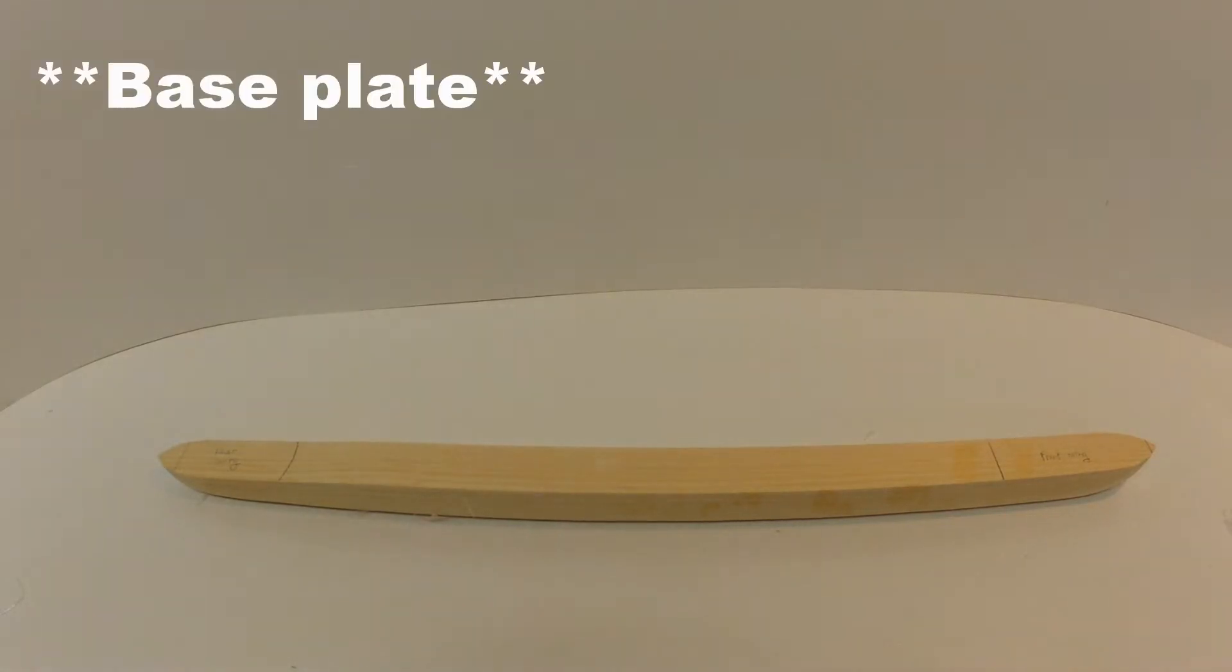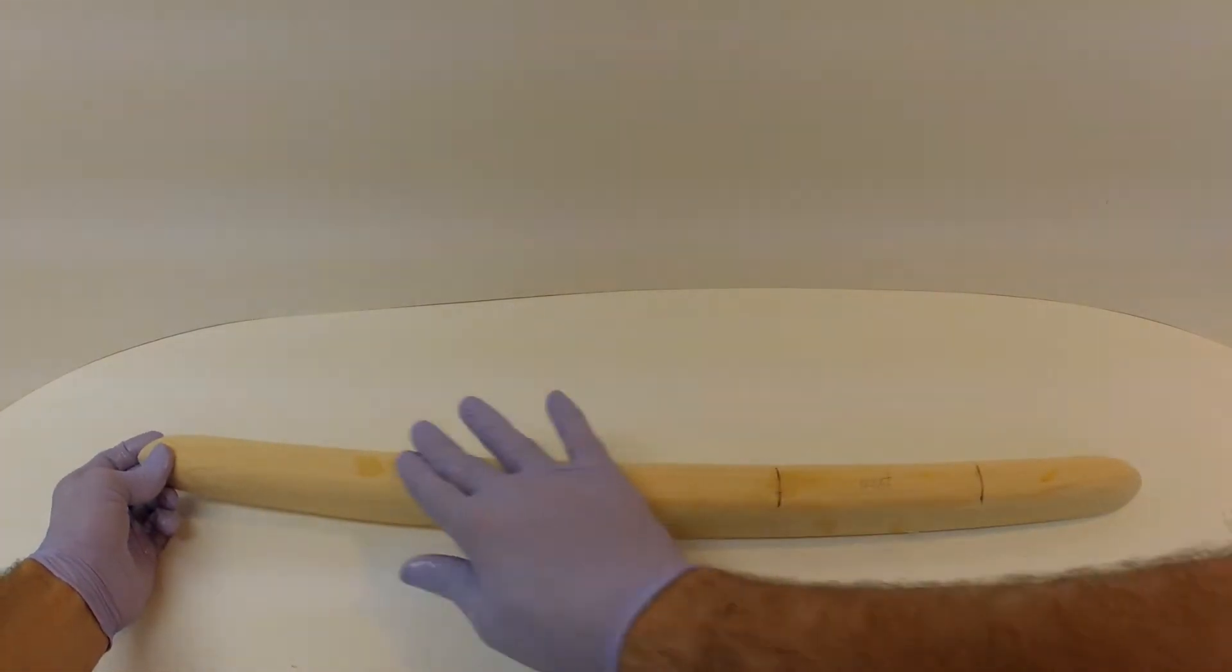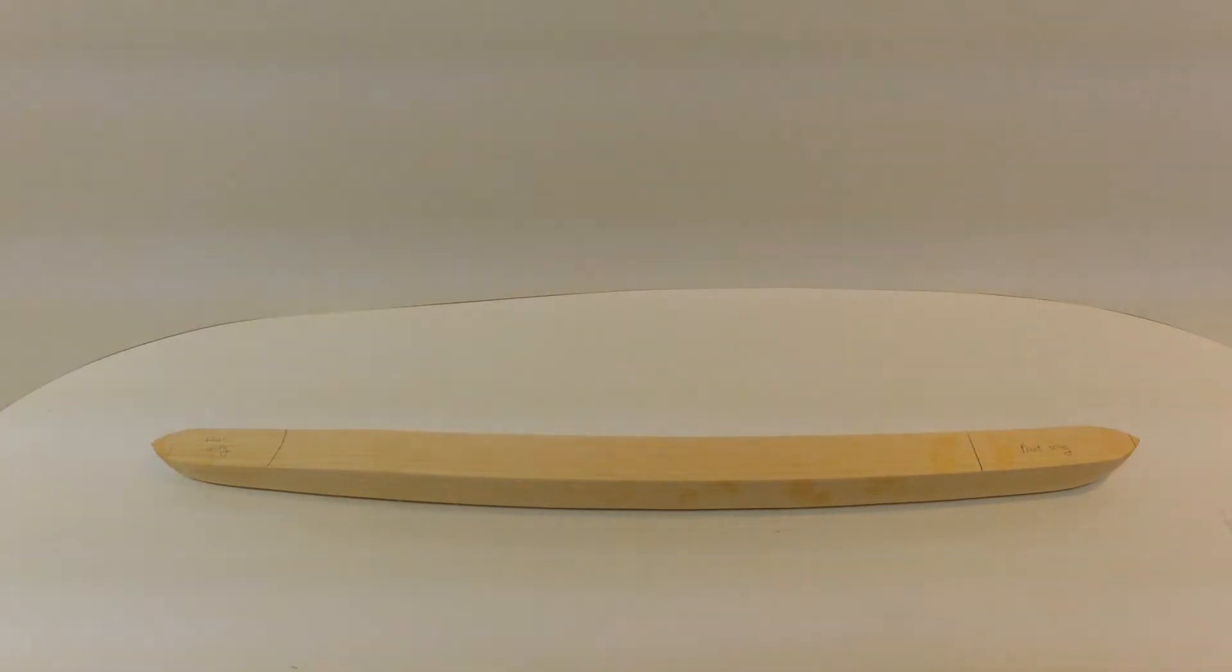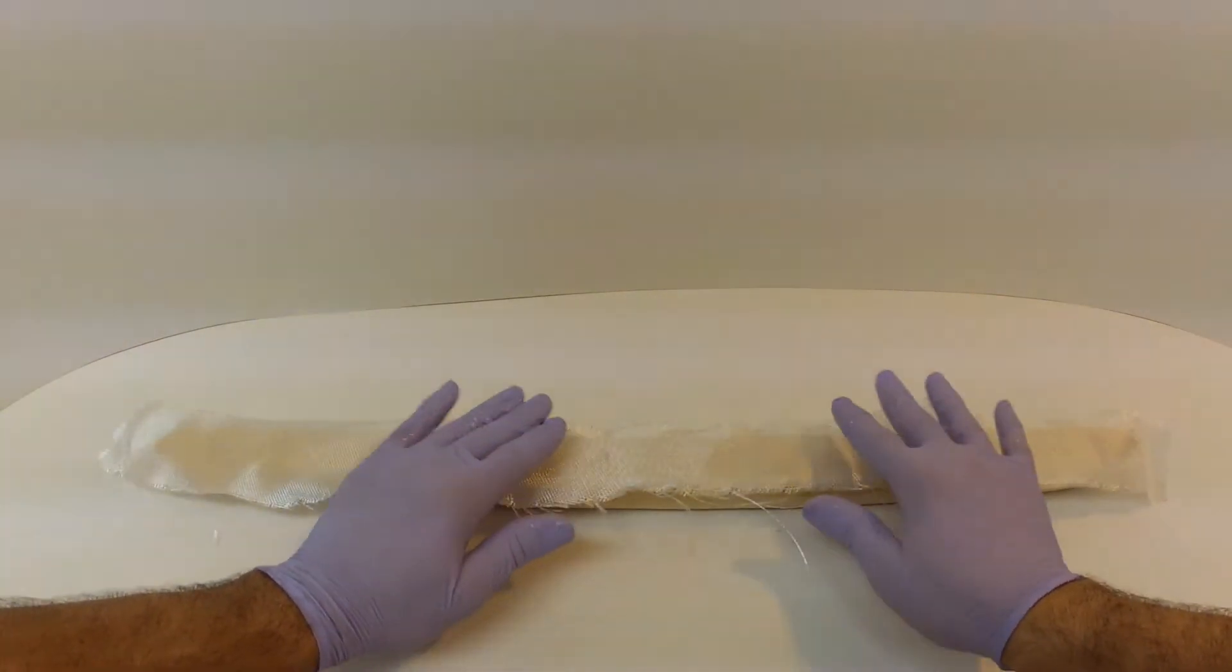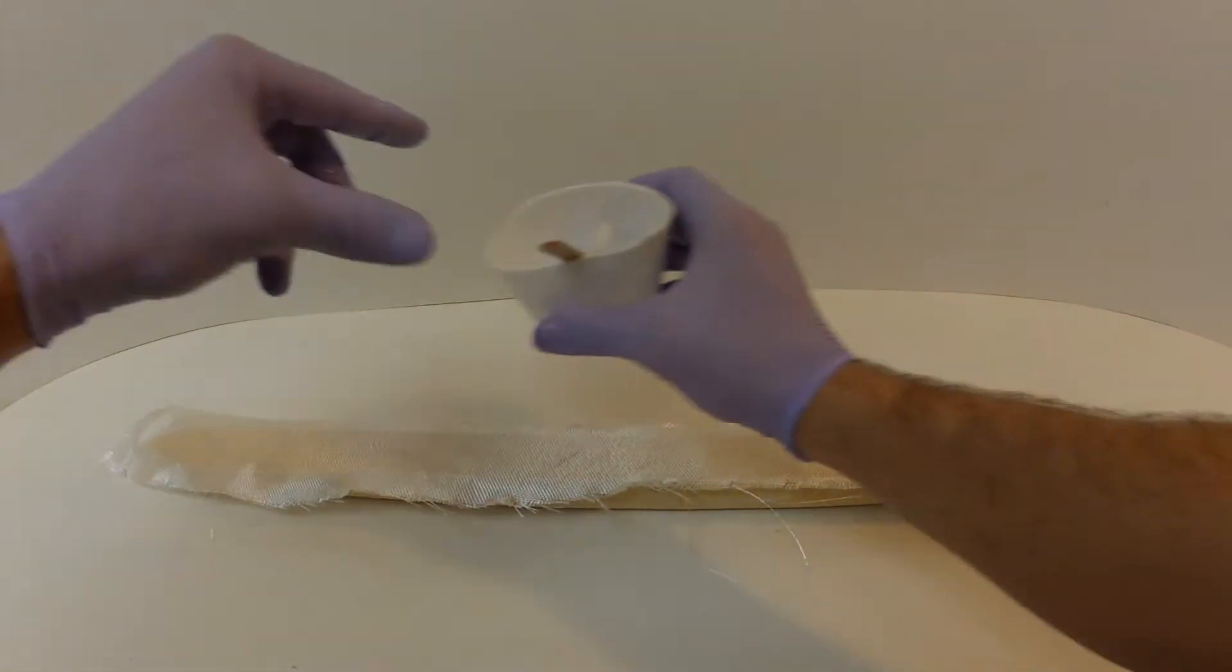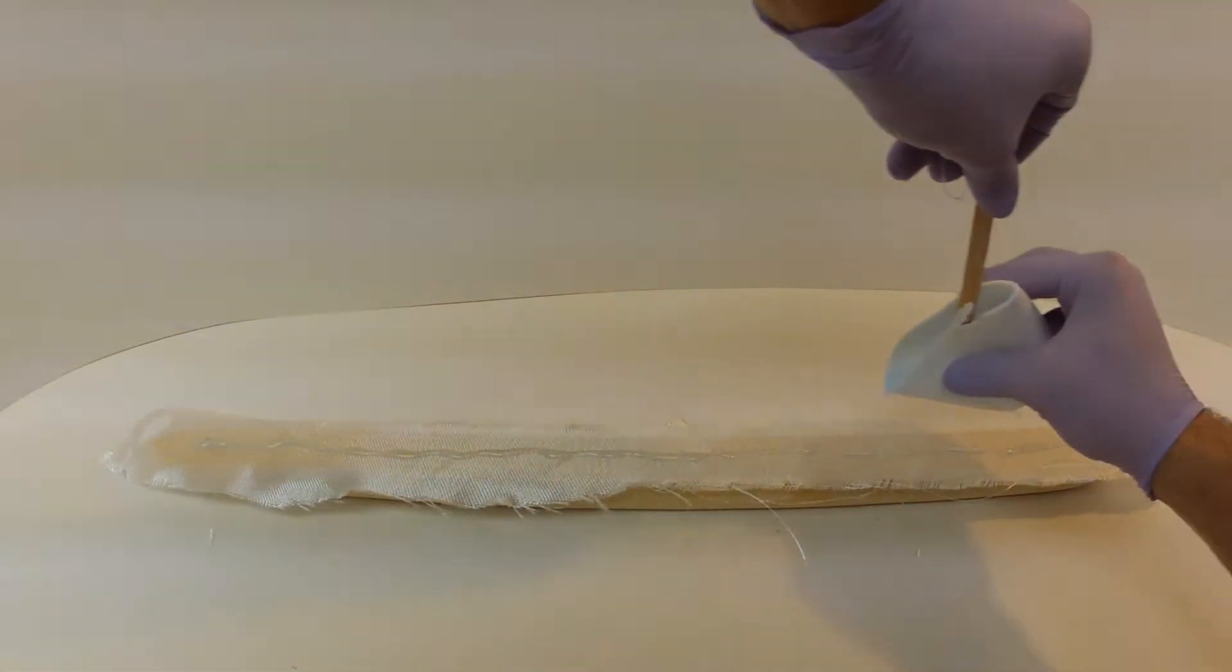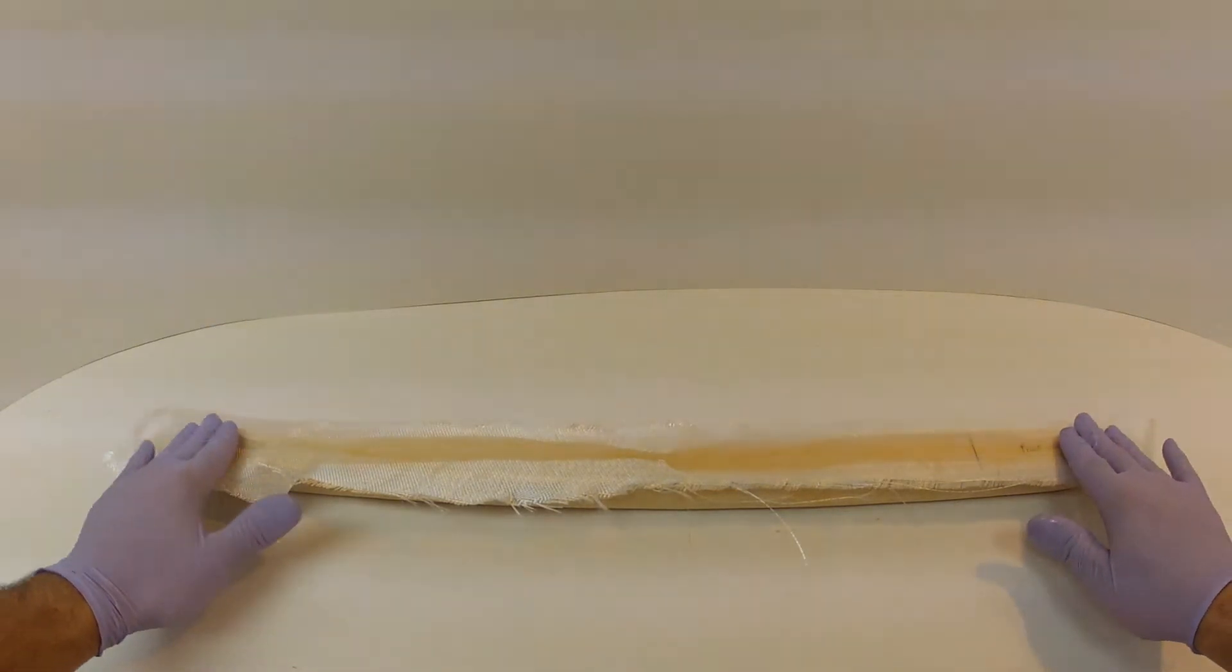Okay, so as the wings are curing, we are going to move on to the fuselage. I have already gotten epoxy all over it, but that is fine. You are going to start by glassing the flat side of the fuselage. Just as before, you take a piece, lay it down, make sure you have overlap over all the edges, and then pour a line.